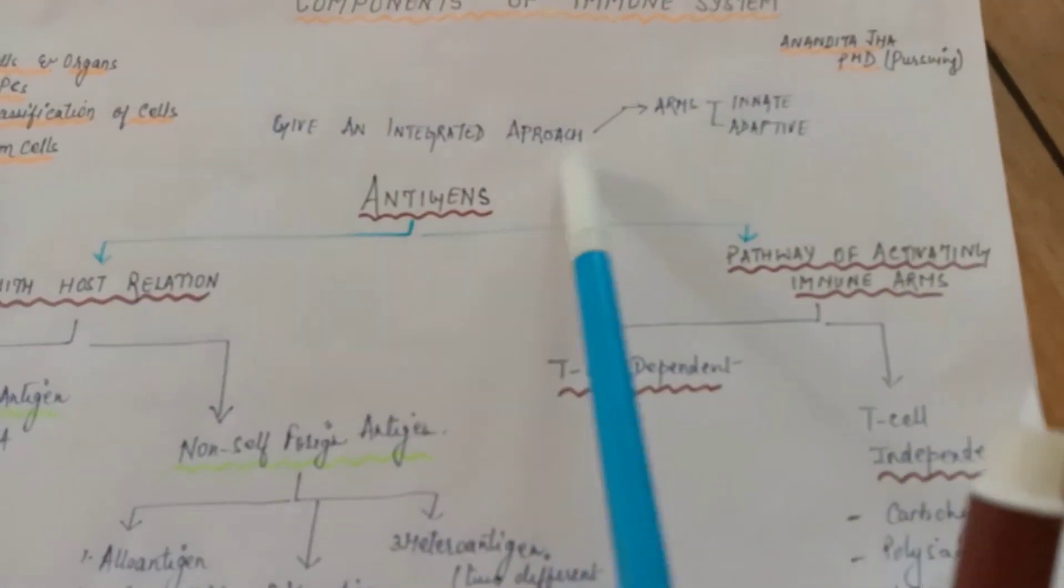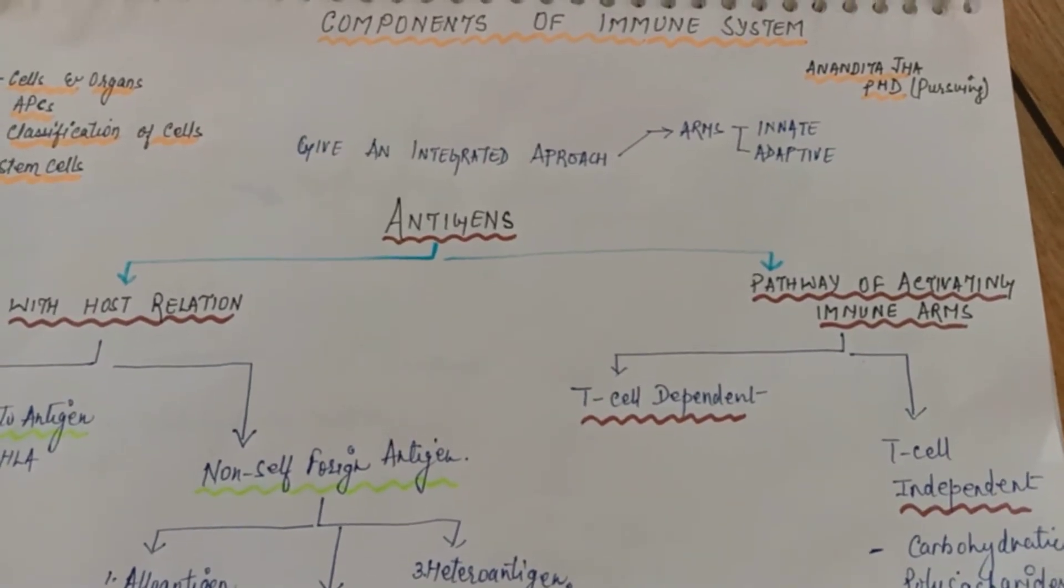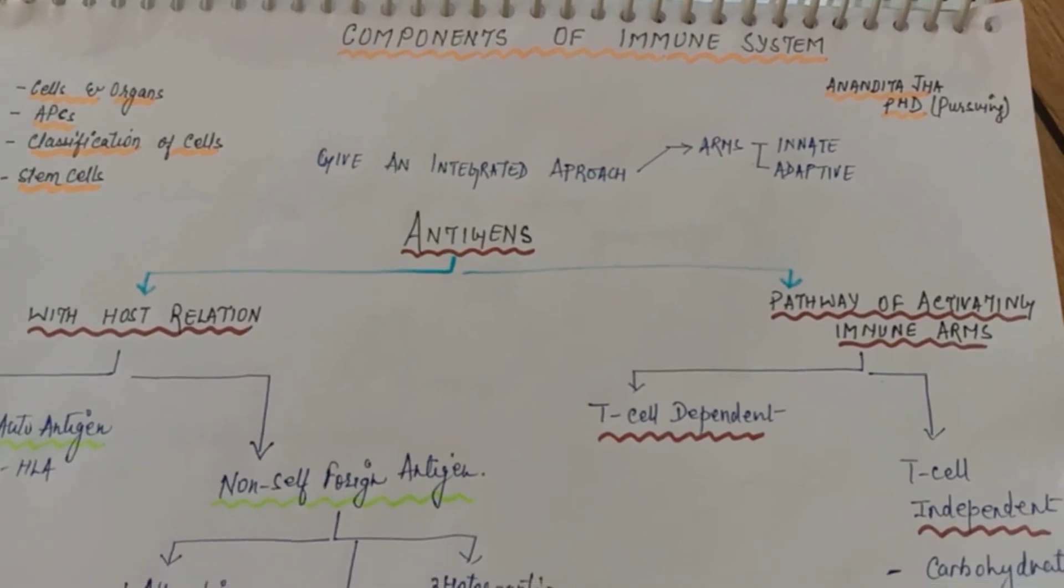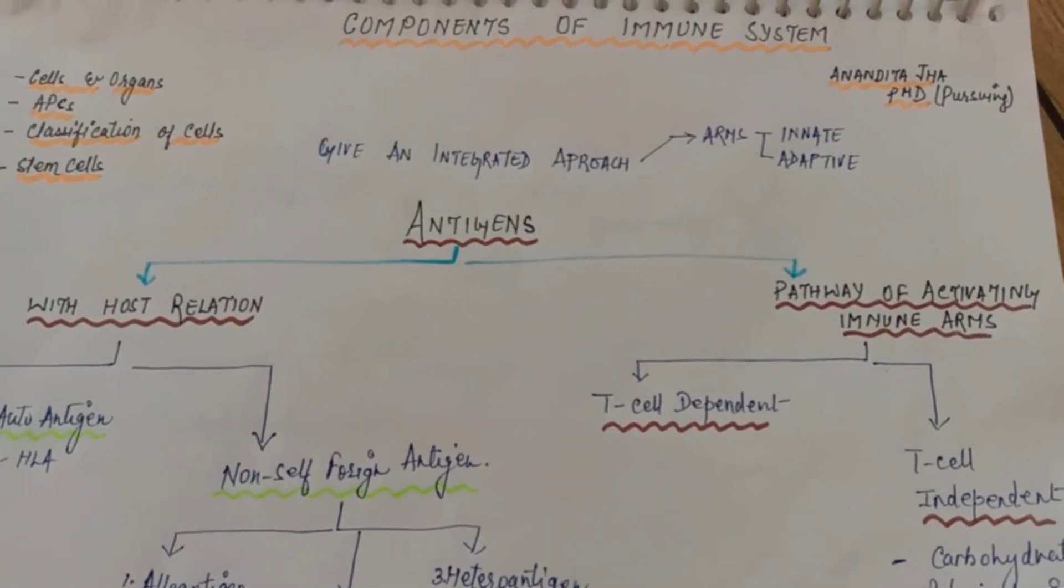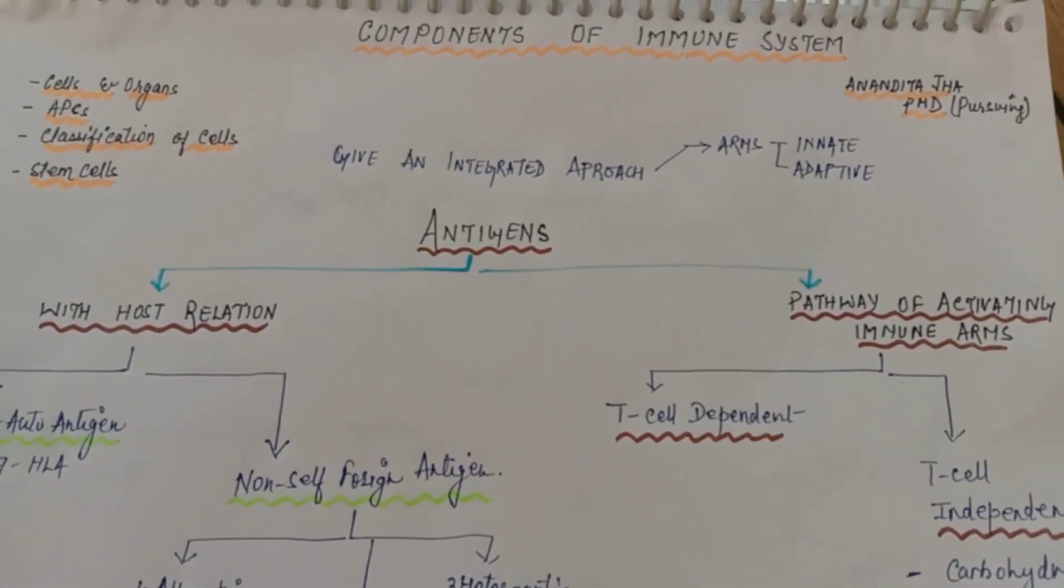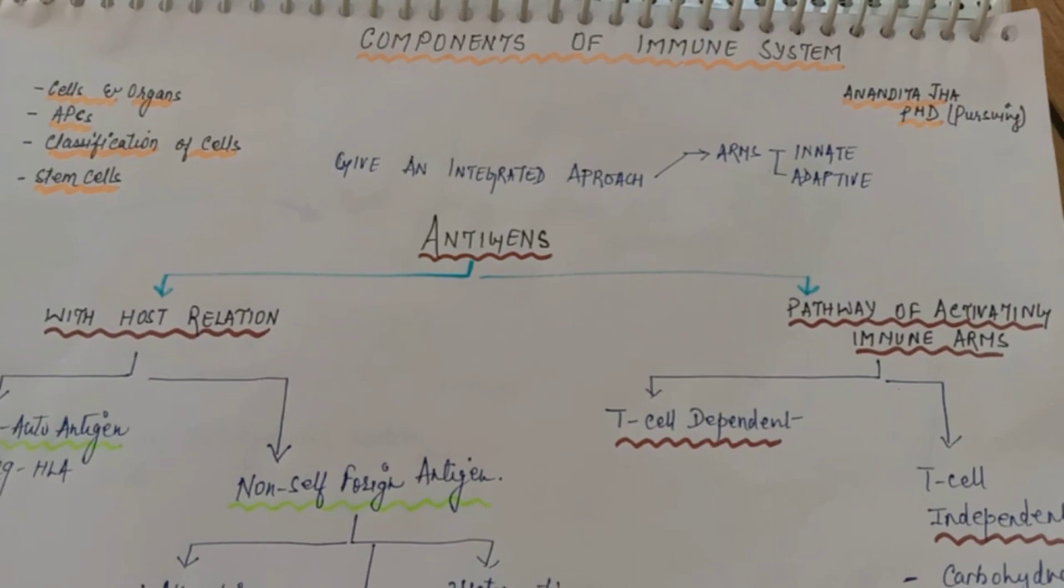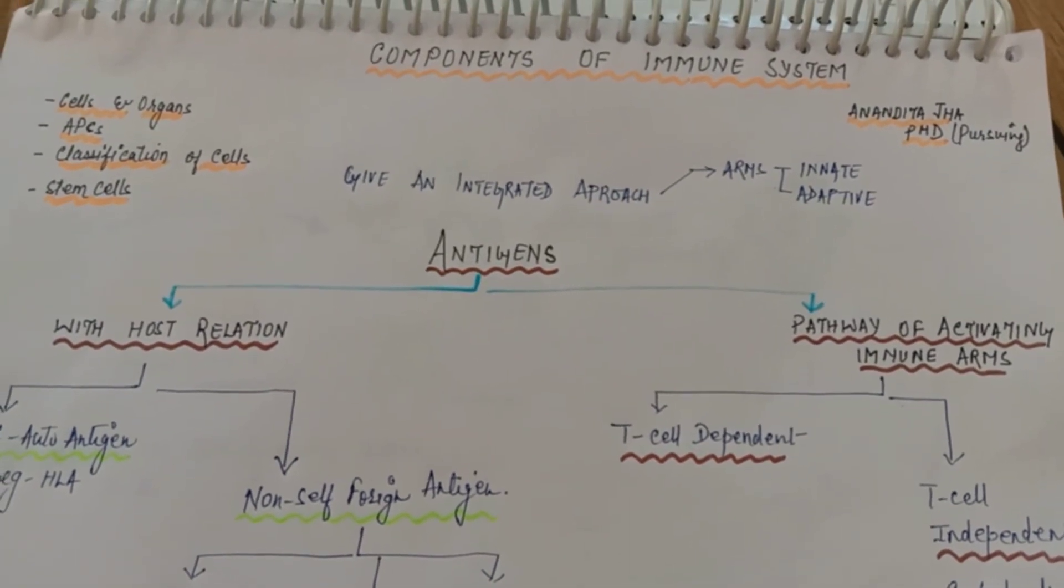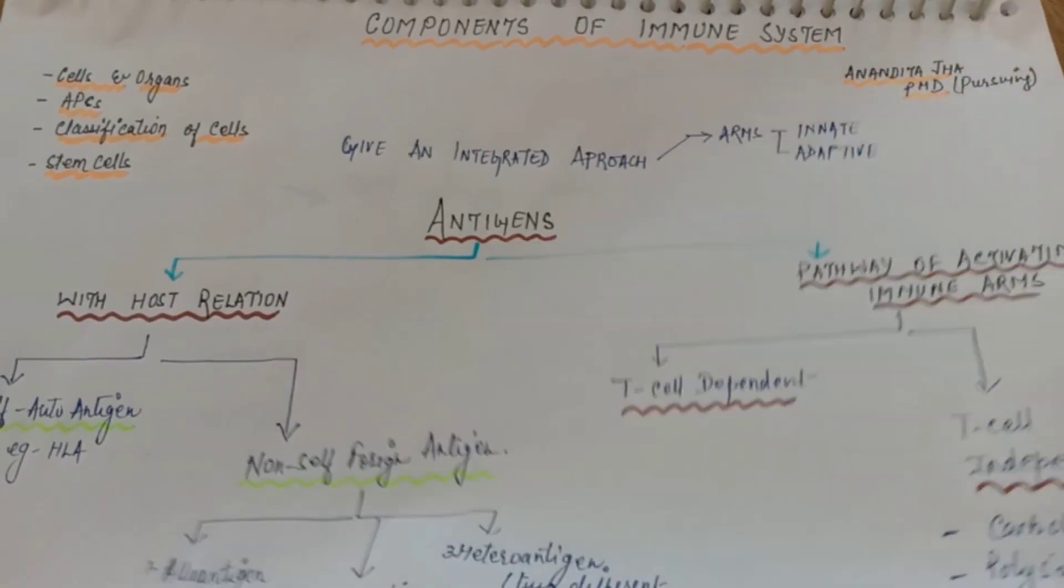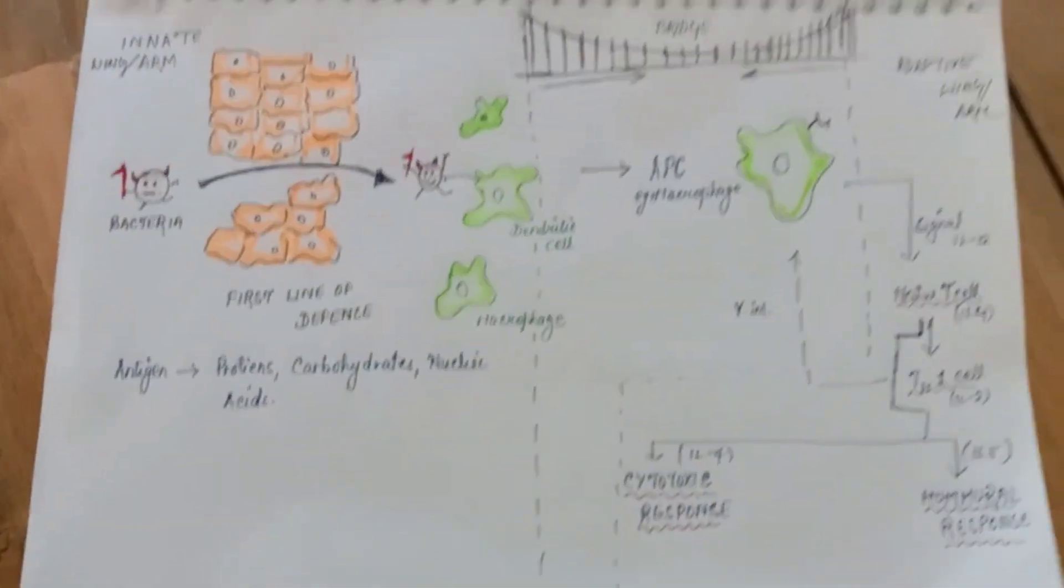Give an integrated approach about immunology. We can't separate innate arm or adaptive arm or study it separately because the innate or adaptive both persist in the same body. Defense mechanism: innate is activating adaptive immune system and adaptive in turn is activating the innate immune system.